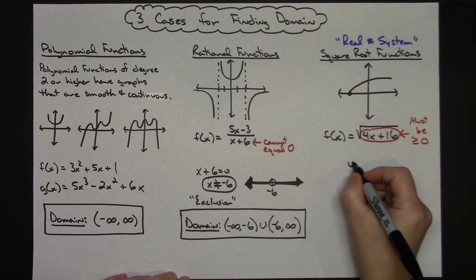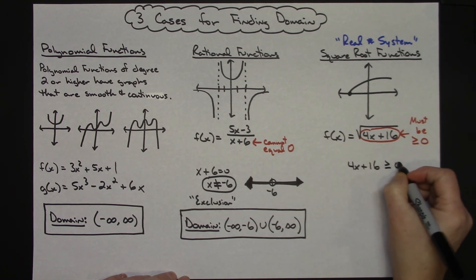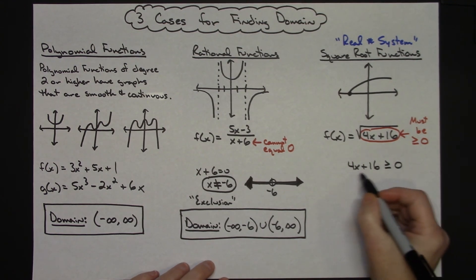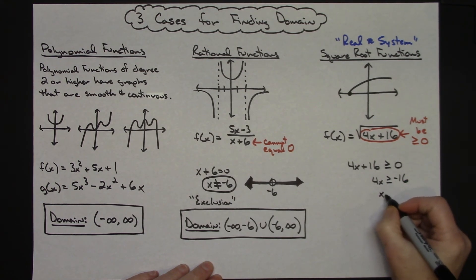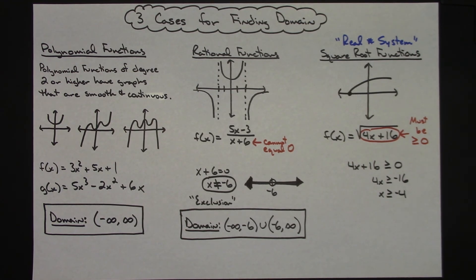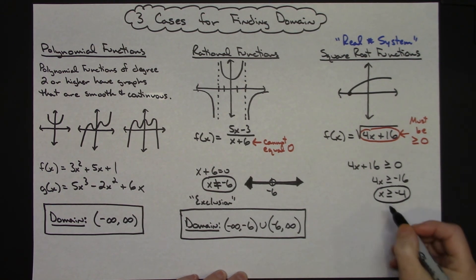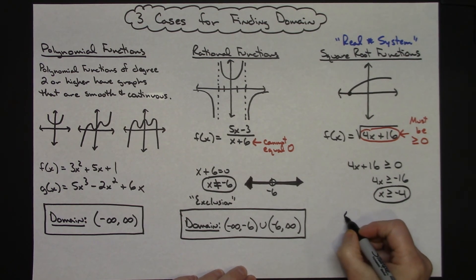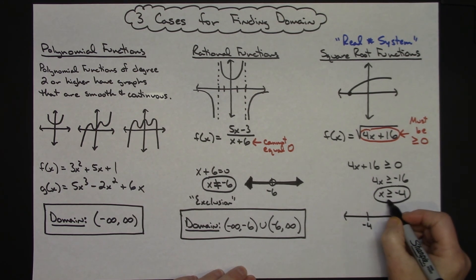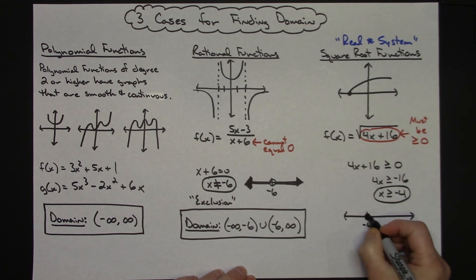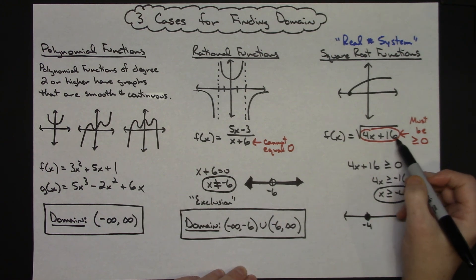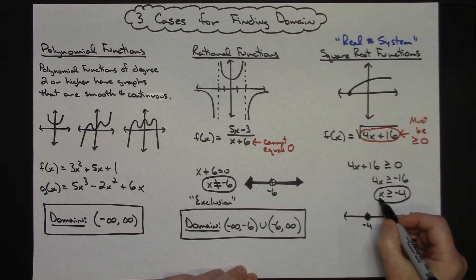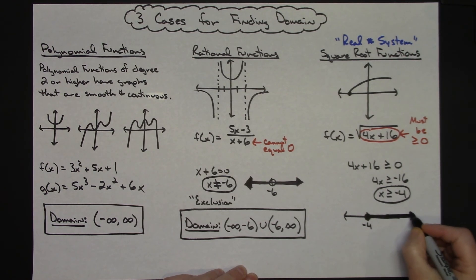In this case, take 4x plus 16 and set it greater than or equal to zero. Solve: subtract 16 from both sides — 4x is greater than or equal to negative 16; divide both sides by 4 — x is greater than or equal to negative 4. That's going to be our domain: all numbers we can put in that will still give us zero or a positive number underneath the radical. Negative 4 is included because 4 times negative 4 plus 16 equals zero.